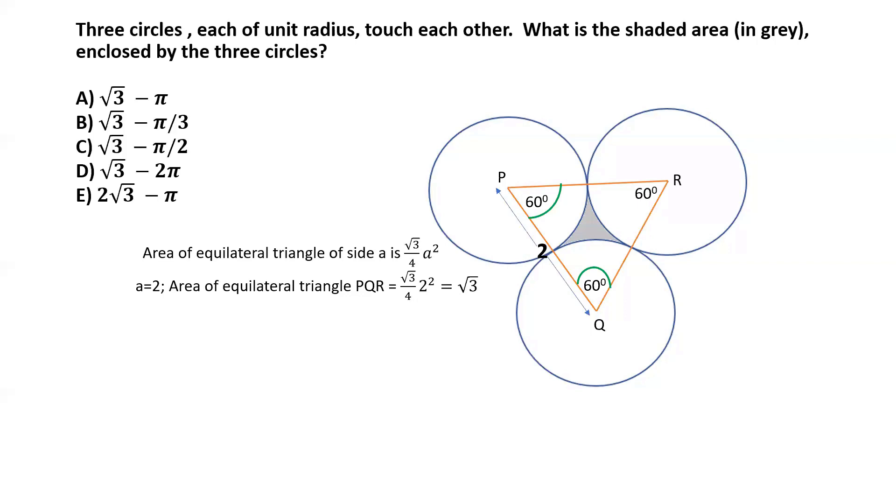So now the question that we have to ask is, we have the three sectors here, and each sector is a 60 degree sector. So what's the area of one such sector, and I have shaded that area that we need to find out.